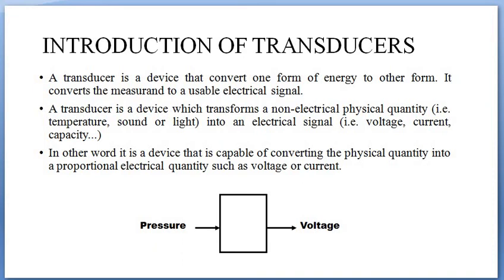The electrical output can be in the form of voltage, current, or capacitance. This conversion can only be done by a transducer. In other words, the final definition is: a transducer is a device that is capable of converting a physical quantity into a proportional electrical quantity.